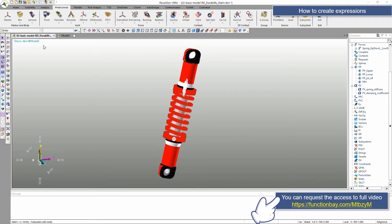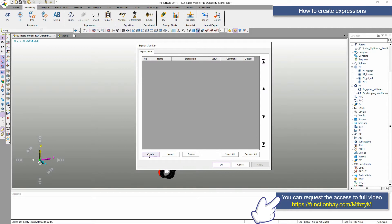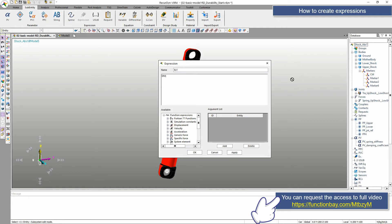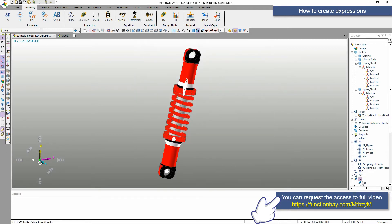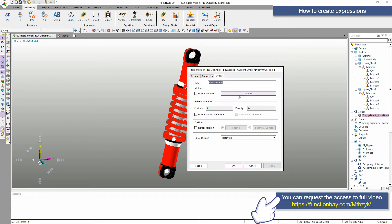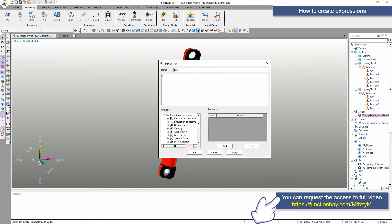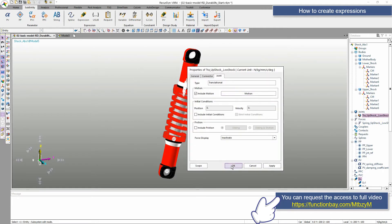The first way to create an expression is to click the expression button of sub-entity, then generate an expression. As you can see, you can create expressions. You can drag and drop the arguments. In the case of joint, you can also open the expression dialog box in the motion dialog box. Here. Done.